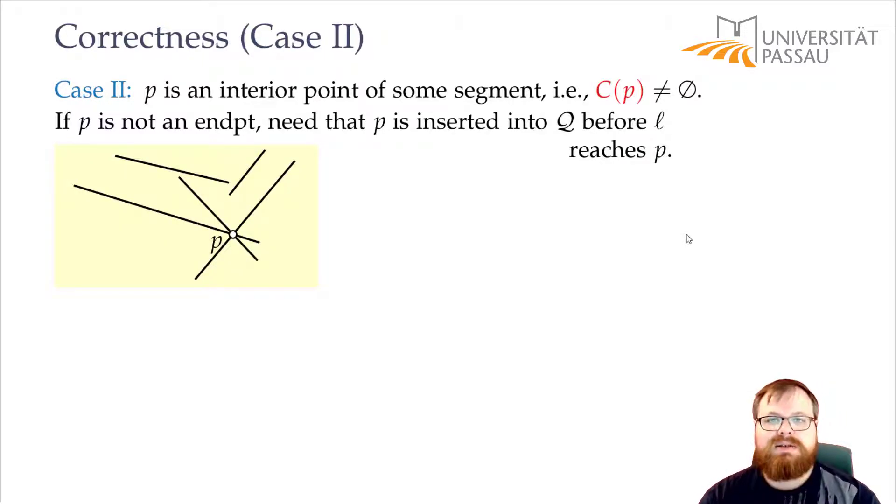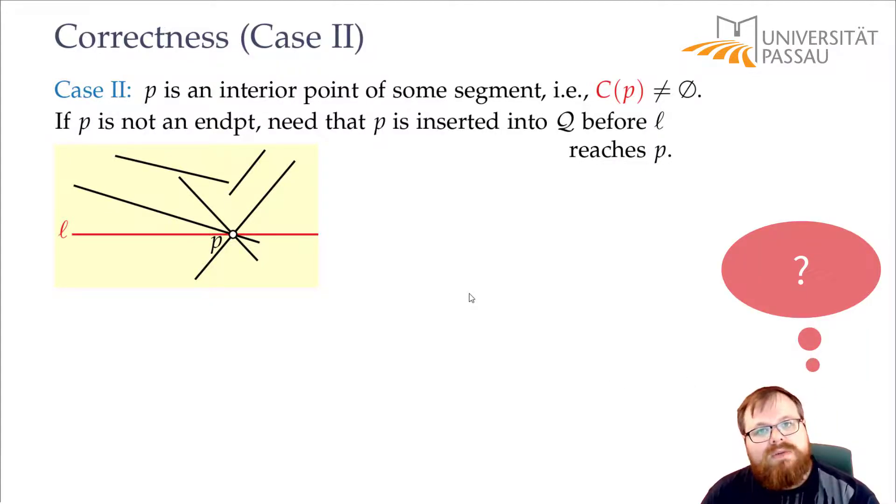Let's have a look at the situation that we have here. We have some point P. It lies in the interior of at least two segments, because it's not the endpoint. Here we even have three. And we have a sweep line that goes through P.